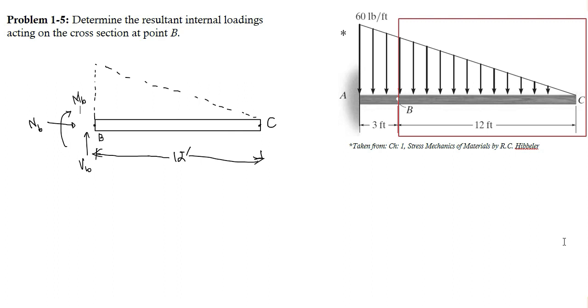Therefore at point B, at a distance of 12 feet from point C, the intensity of the UVL at point B would be 48 pounds per foot, which is calculated in this way.